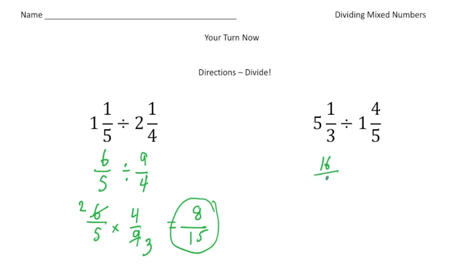So this is going to be sixteen-thirds divided by nine-fifths. And now we can keep changing flip. So sixteen-thirds times five-ninths. And we've got to see if we can cross-reduce. And we cannot.